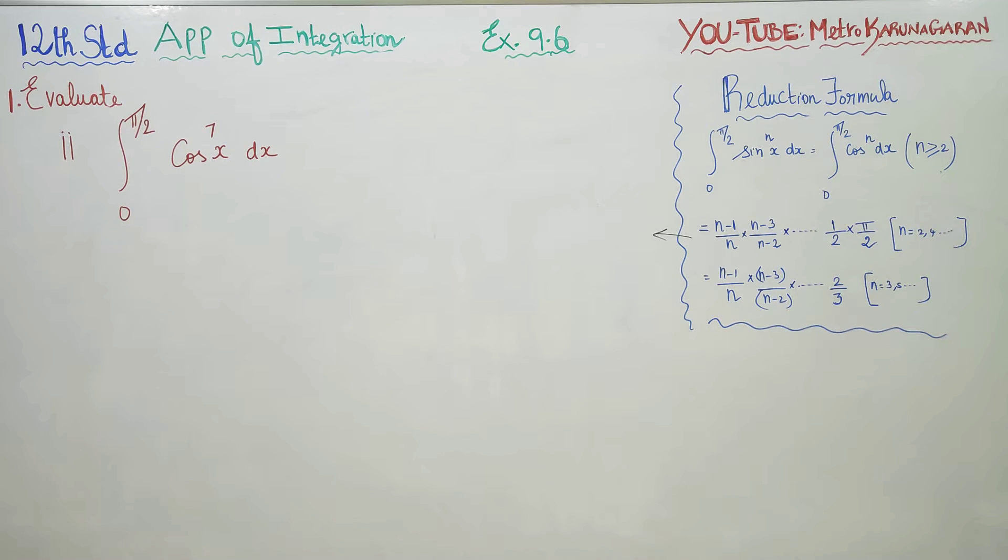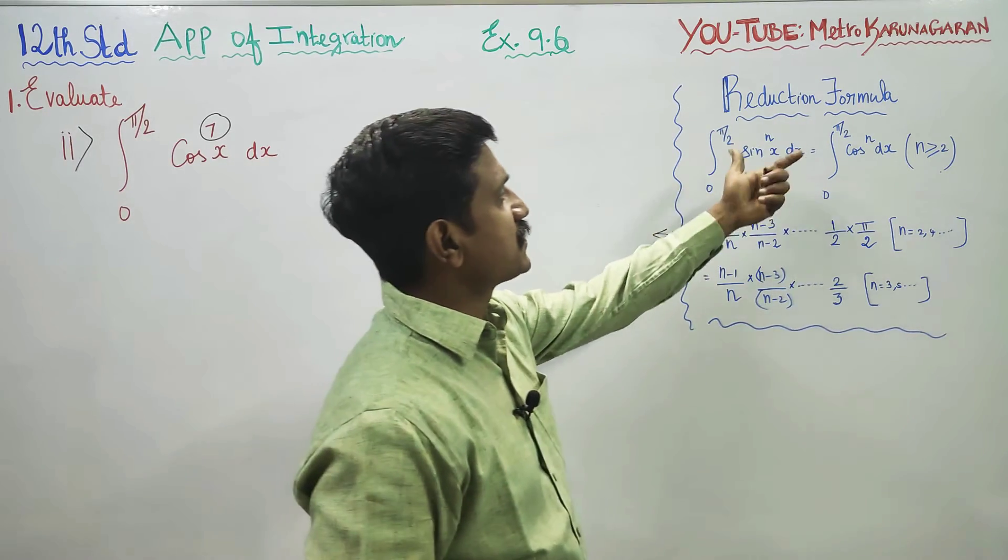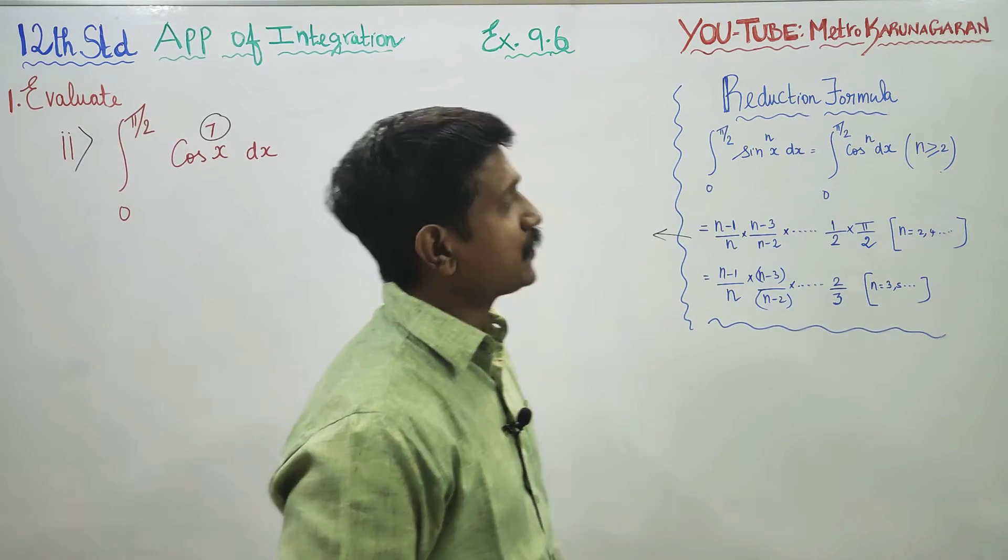Dear 12th standard students, in exercise number 9.6, sum number 1, second subdivision: integral from 0 to π/2 of cos^7(x)dx. We'll solve this using the ready-made reduction formula.